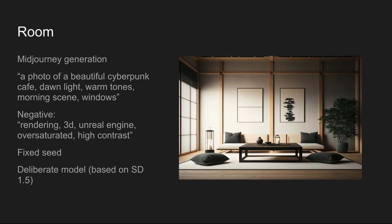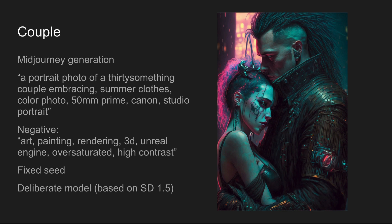As before, we're going to use the same input images and prompts. We've got a photo of this interior living room with a sort of Japanese style, and we're going to try and turn that into a cyberpunk cafe. We've also got our cyberpunk couple and we're trying to turn this painting into something that is a photo — we want them to be 30-something, summery, in summer clothes.